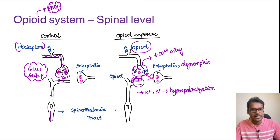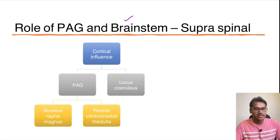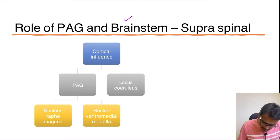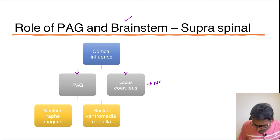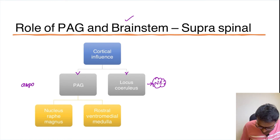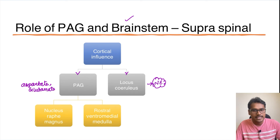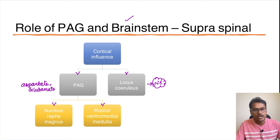Now coming to the supraspinal level: the most important role is for the periaqueductal gray matter and brain stem region. Impulses from the cortex reach the periaqueductal gray matter as well as another area called the locus ceruleus. From the locus ceruleus, the neurotransmitter released is norepinephrine. The periaqueductal gray matter then stimulates two other regions via the neurotransmitters aspartate and glutamate. These two regions are called nucleus raphe magnus and the rostral ventromedial medulla.